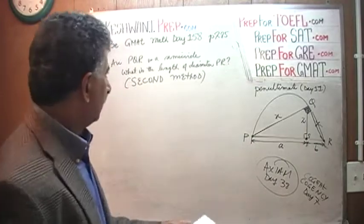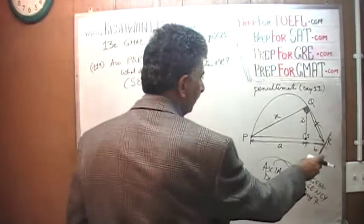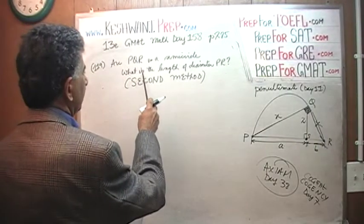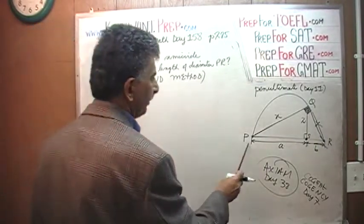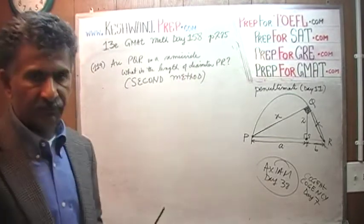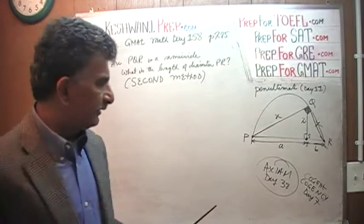We have a semicircle here that is given to us, PQR. We are asked here what is the length of the diameter P to R. And what I explained yesterday, and again one more time, when I say yesterday I mean day number 156.